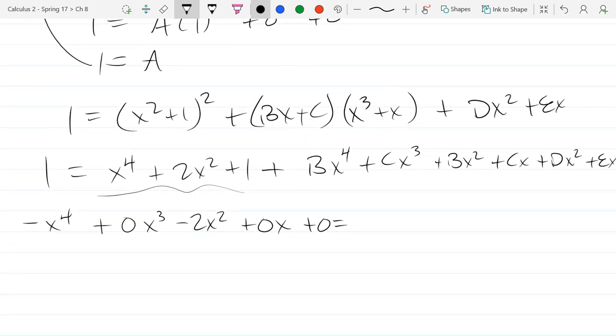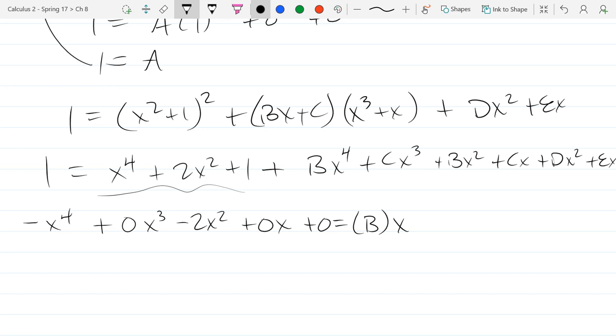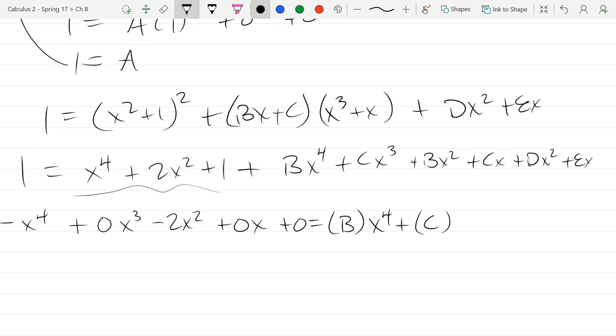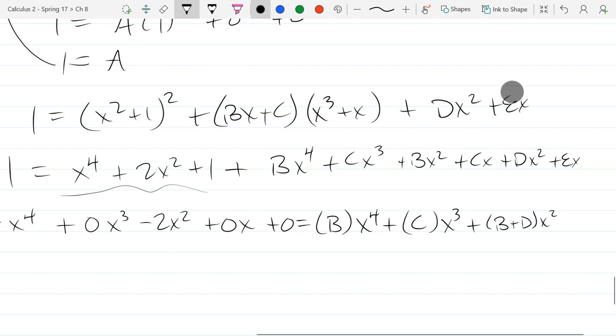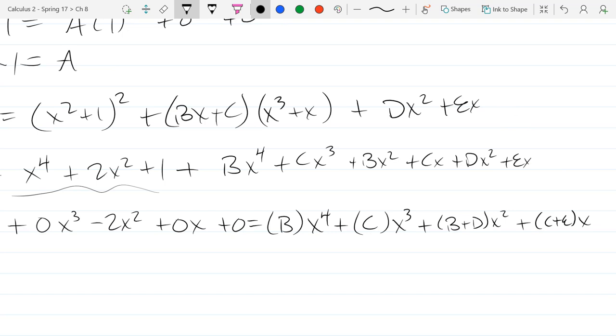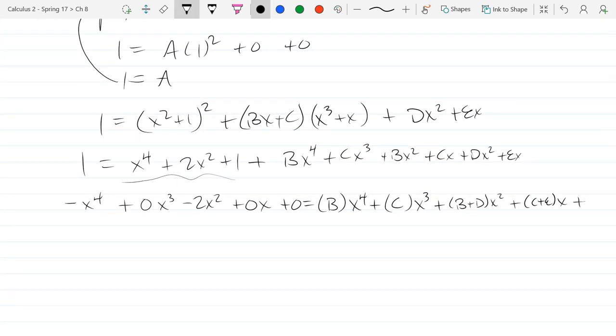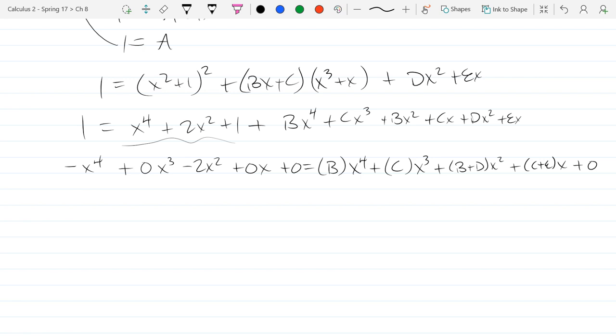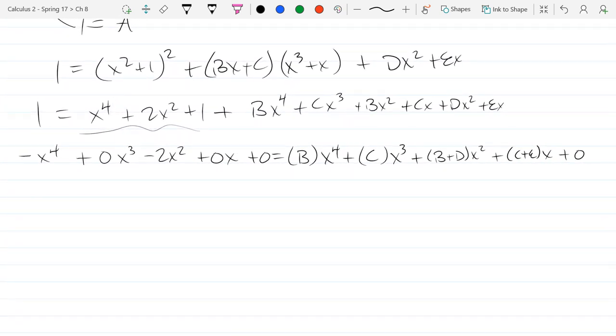On the right side, we're going to collect similar terms. We have bx to the fourth plus cx cubed, b plus dx squared, c plus ex, and there's no constant term. So there's going to be five equations we get out of here when we match coefficients.